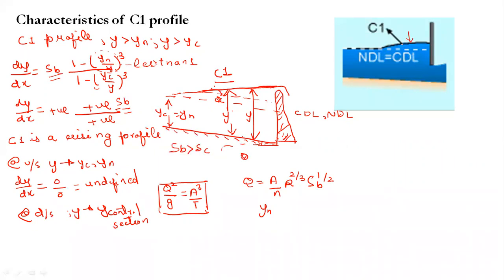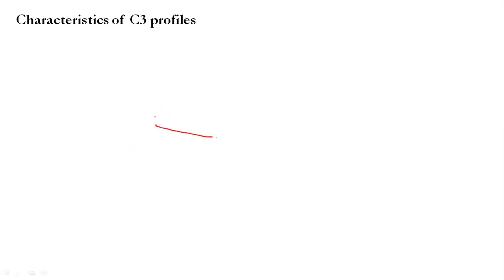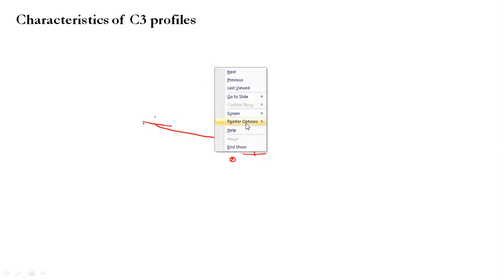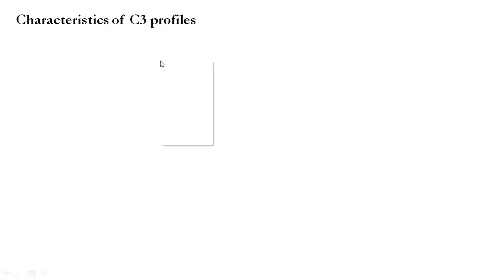So the C1 profile is a rising curve that is nearly horizontal in appearance. A practical example: on a critical slope, if you place a sluice gate, behind the sluice gate you will find a C1 GVF curve. Similarly, for the C3 profile, we draw the slope again with S_b = S_c (critical slope), where the CDL and NDL are the same line with YN = YC.